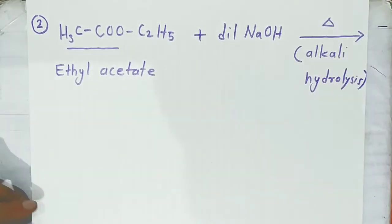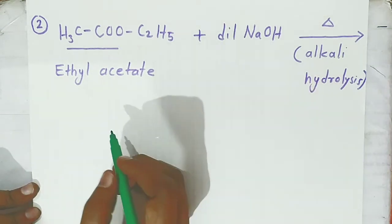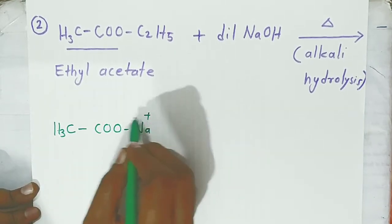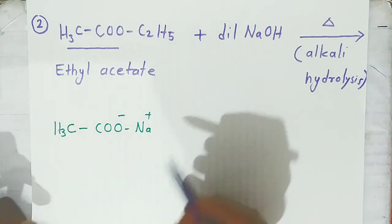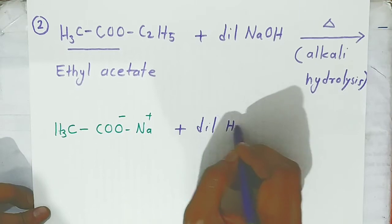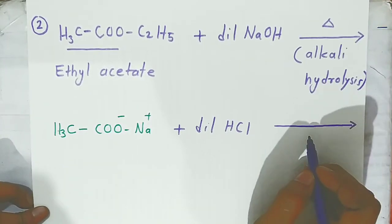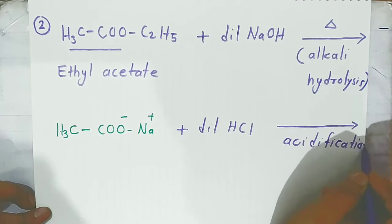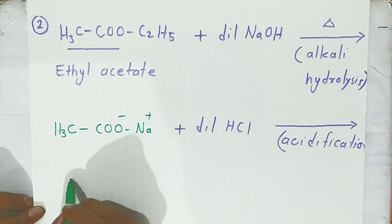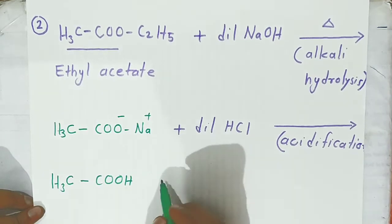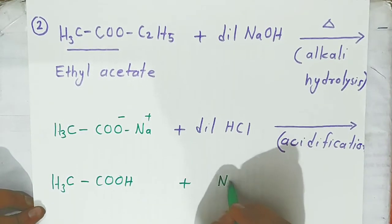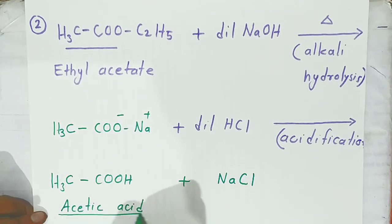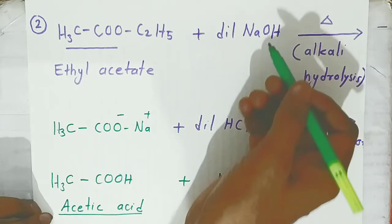So far we saw acid hydrolysis; now we are looking at alkali hydrolysis. In alkali hydrolysis, first you get a sodium salt of the acid — CH3COONa. Then you have to add dilute acid again — this is called the acidification reaction, and acid formation takes place. You get acetic acid (CH3COOH) and sodium chloride as products. If you want only acetic acid, you have to use alkali hydrolysis.